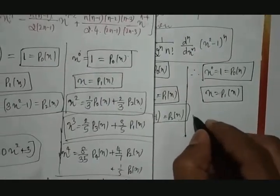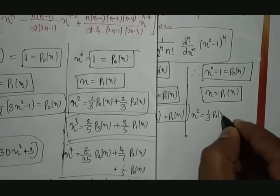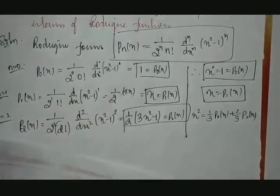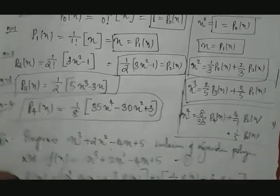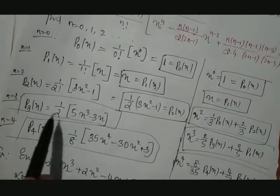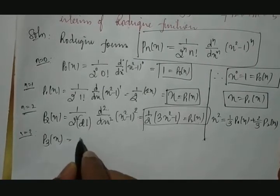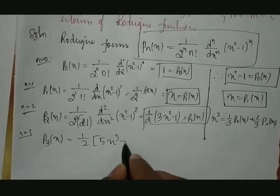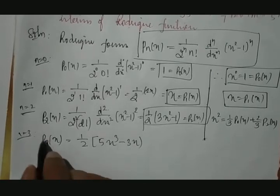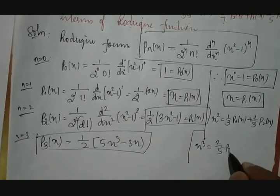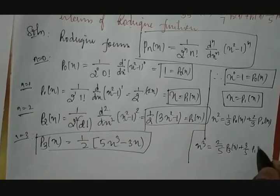Therefore x² = (1/3)P₀(x) + (2/3)P₂(x). Continuing further for n = 3, P₃(x) = (1/2)(5x³ - 3x). Extracting x³ from this result gives x³ = (2/5)P₃(x) + (3/5)P₁(x).